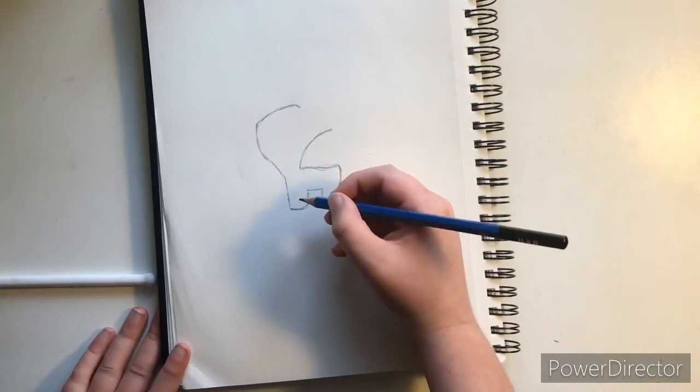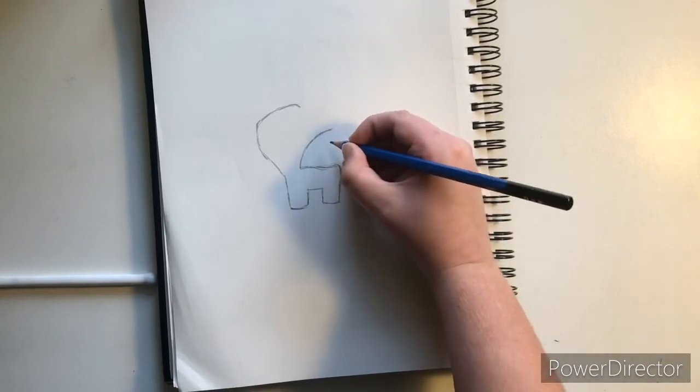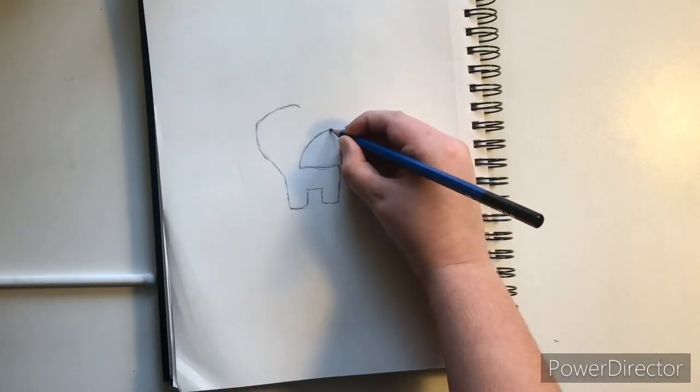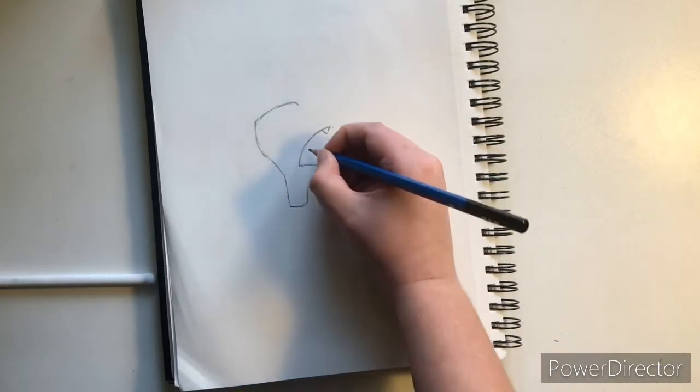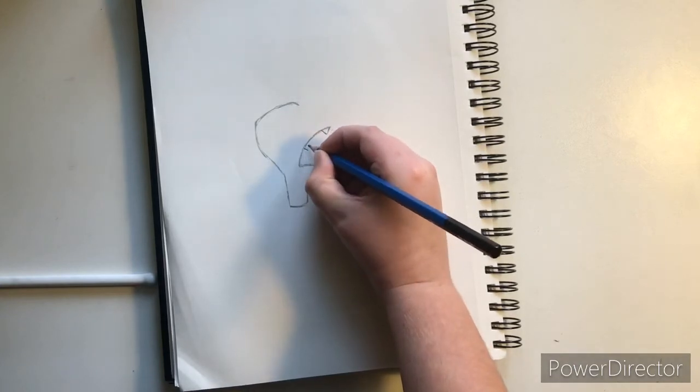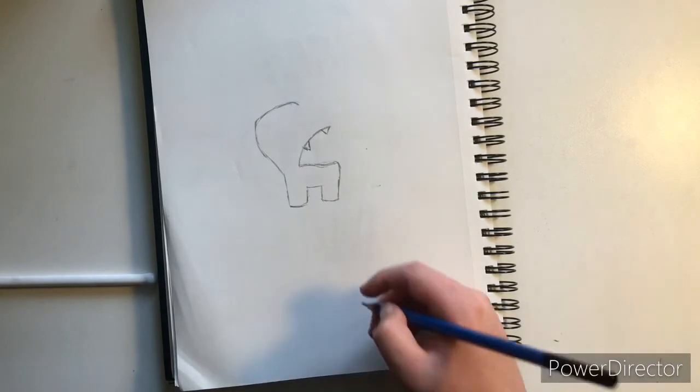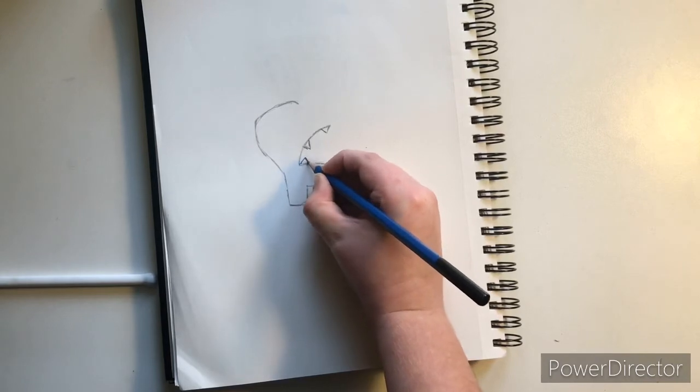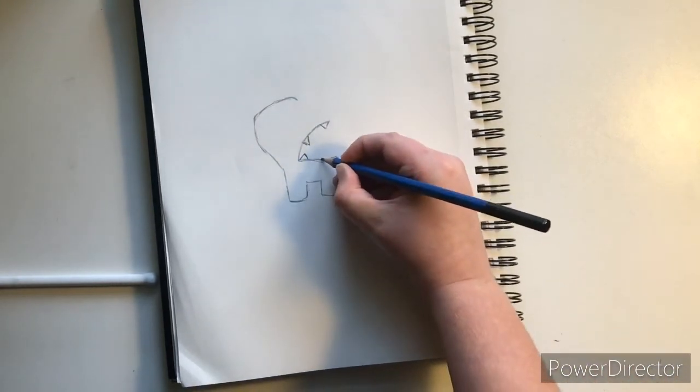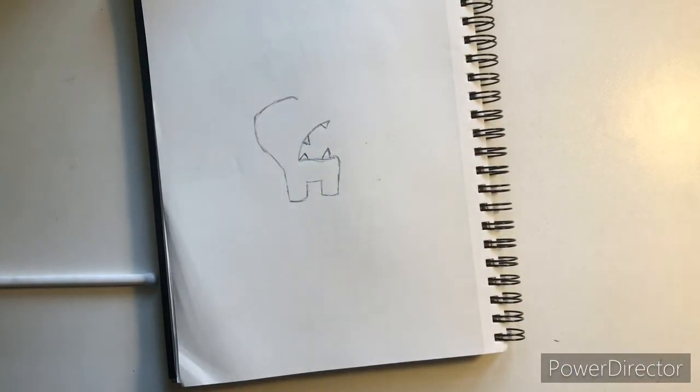What you can do is start doing the teeth. So you go somewhere near the edge here and do a tooth, and you can do one about right here, and then you can do one right in the corner there, and one right here. Okay, so now that you have all the teeth.